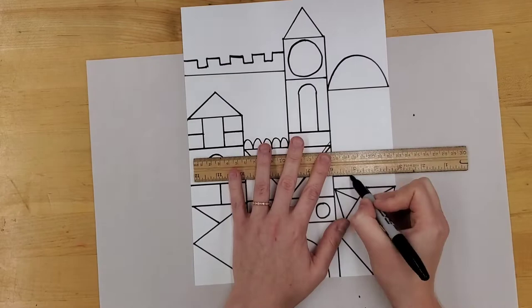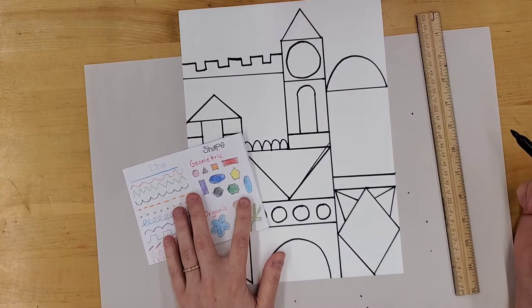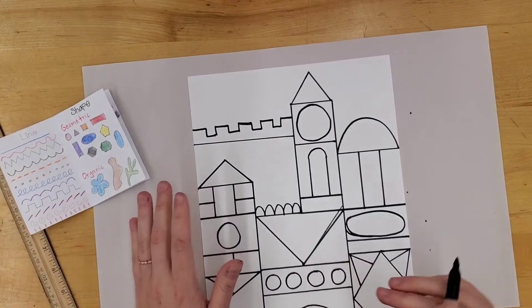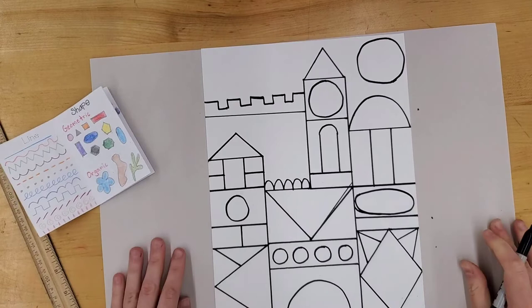If you need shape ideas, check your Elements of Art workbook. If you'd like to add a sun or a moon, make sure you pop it up there. And that's a wrap for day one.